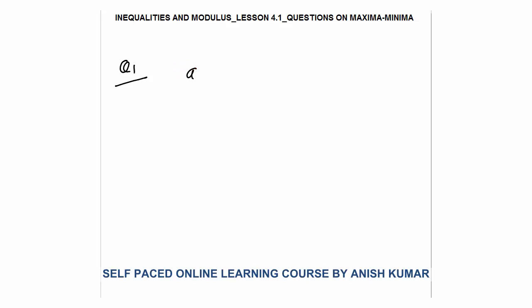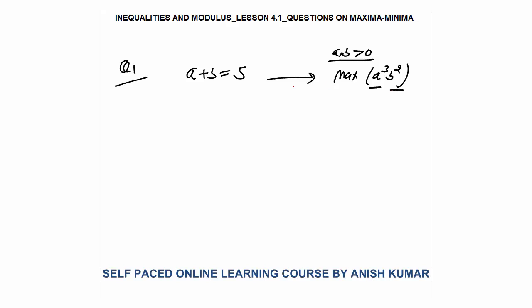Let's say a plus b is given to us as five, where a and b are real numbers greater than zero. You need to find the maximum value of a cubed times b squared. Now pause the video and try to solve yourself. We need a three times and b two times.